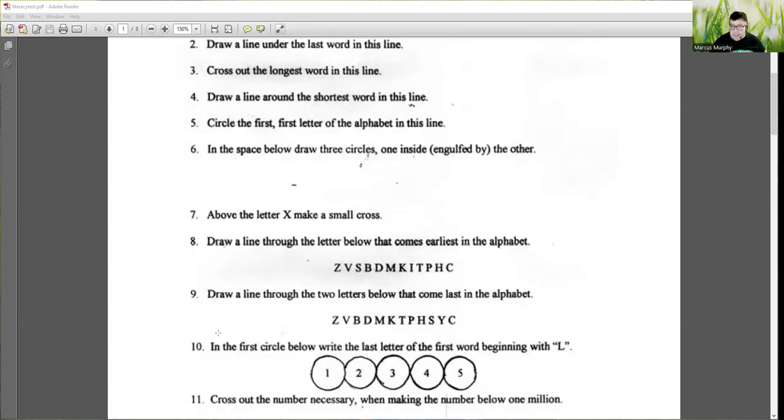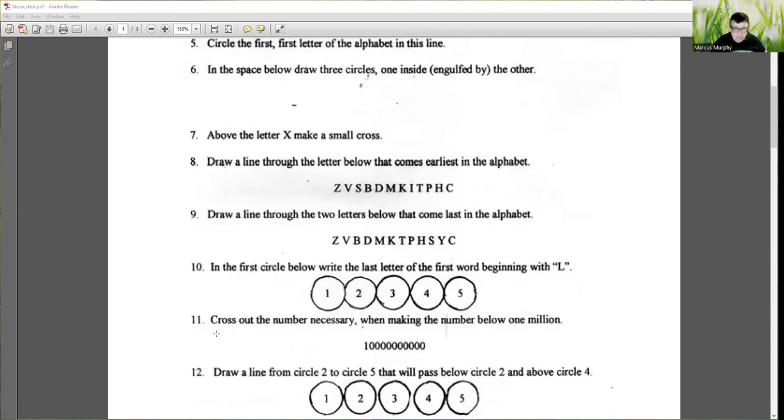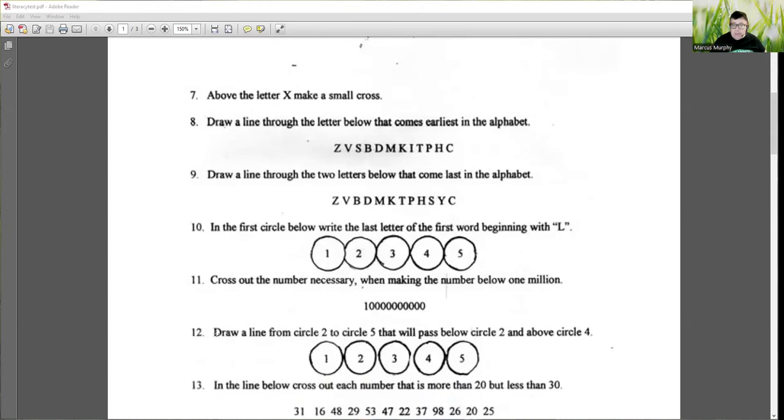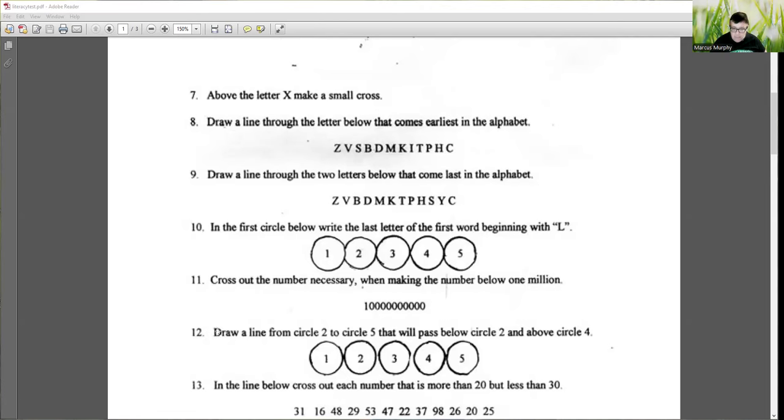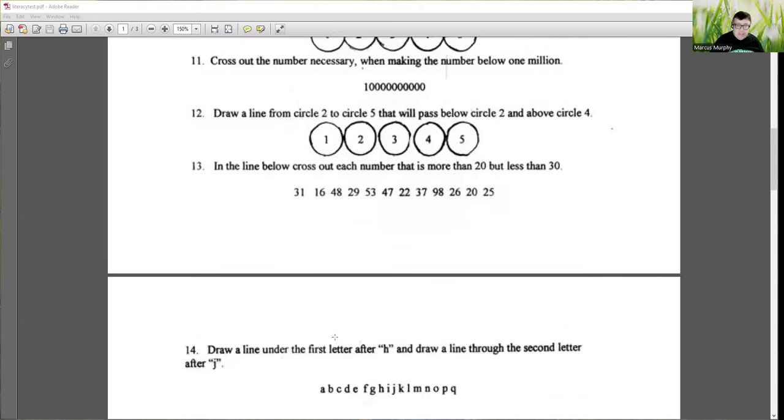Draw a line through the two letters below that come last in the alphabet. In the first circle below, write the last letter of the first word beginning with L. Cross out the number necessary when making the number below one million. Draw a line from circle two to circle five. It will pass below circle two and above circle four. In the line below, cross out each number that is more than 20 but less than 30. Again, not hugely difficult, but you need time to think about it and read the line. And you've got 10 minutes to remember to do this.